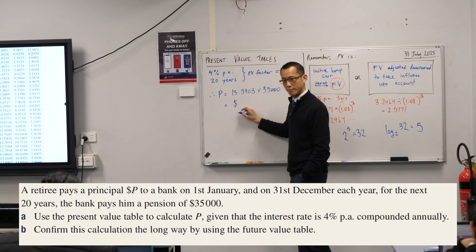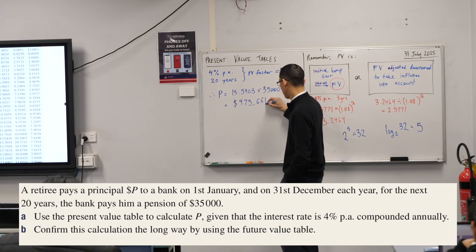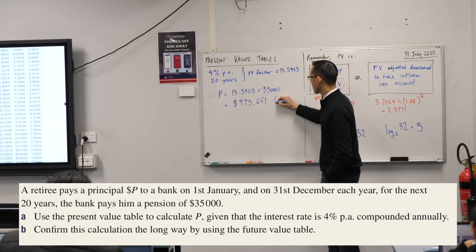What's our dollar sign? From memory, it starts with a four, doesn't it? Four hundred and? Four hundred and seventy-five thousand? Yep. Six hundred and sixty. Sixty? Sixty-one dollars. And I'm going to write six significant figures here.